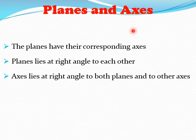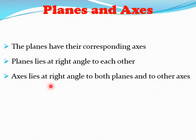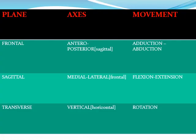Planes and axes. Planes have their corresponding axis. Planes lie at right angles to each other. Axes lie at right angles to both planes and to the other axes. There are three planes and axes in which movement occurs.